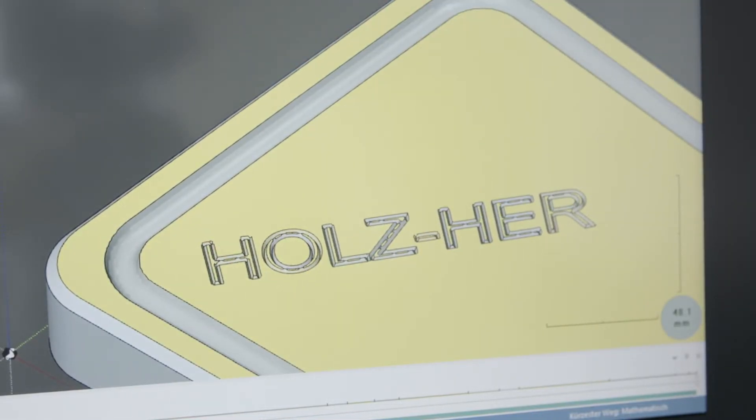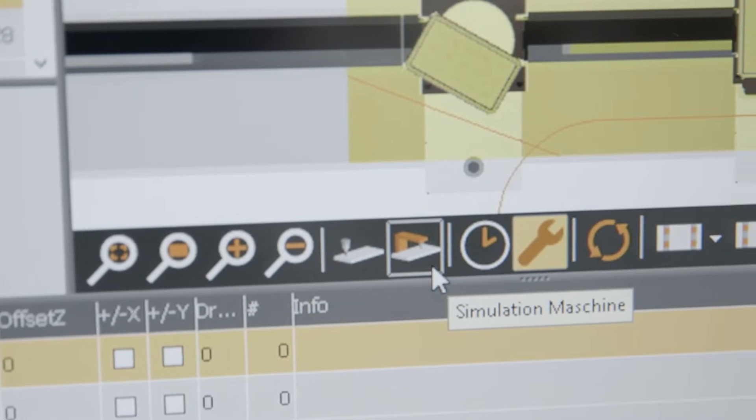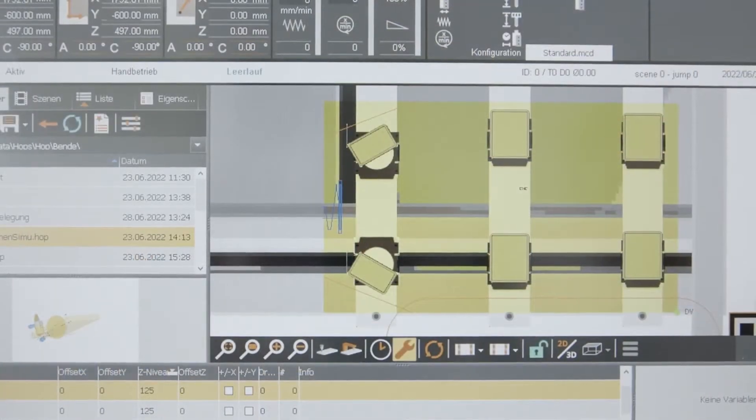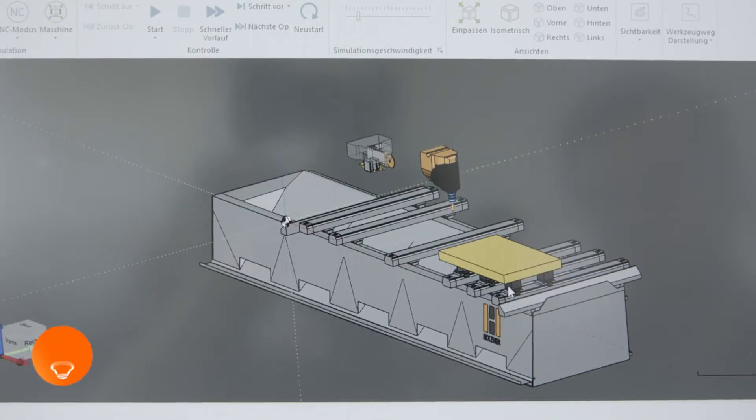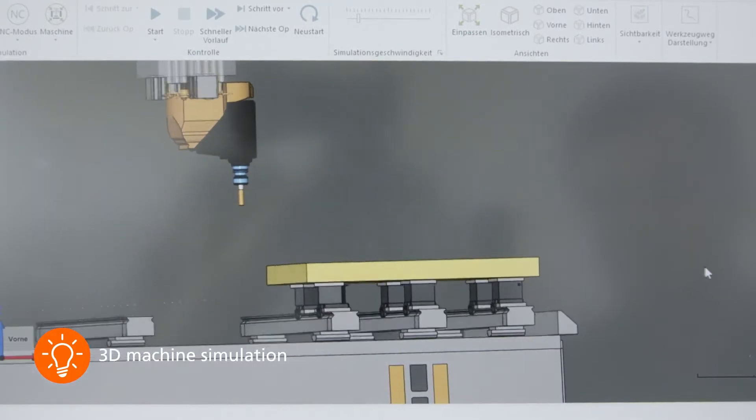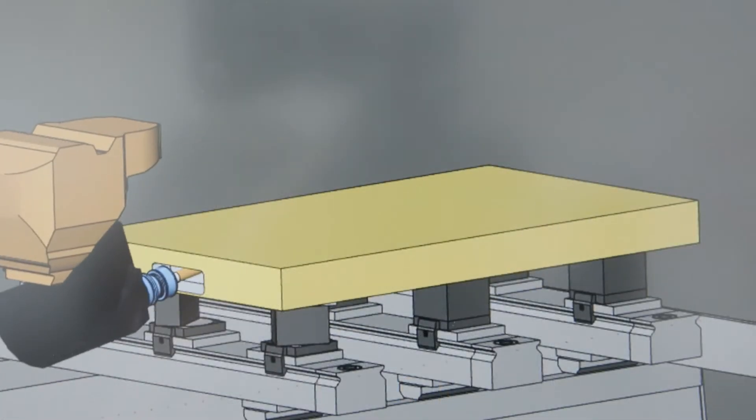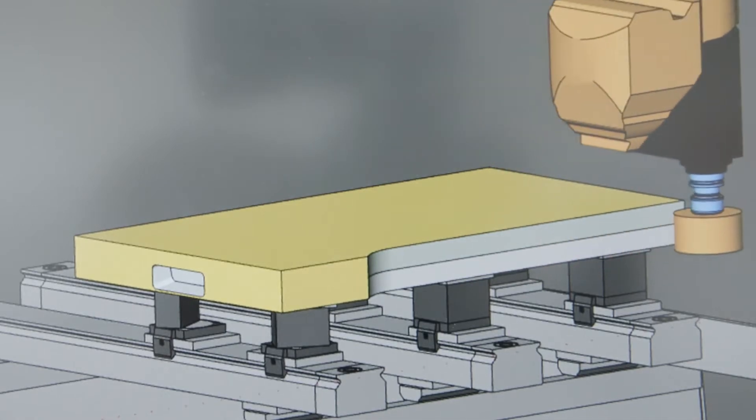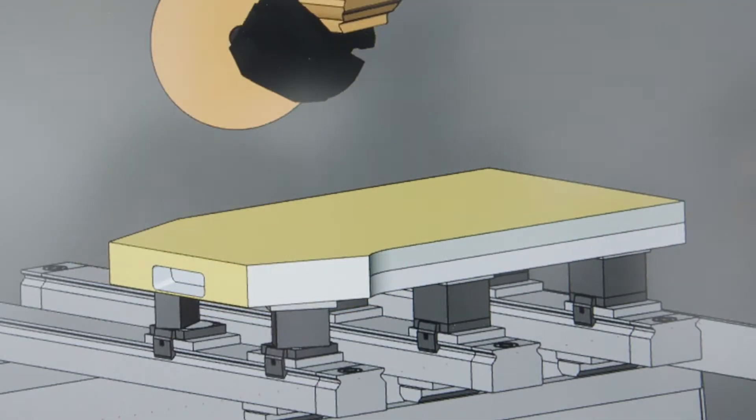This allows you to check all drilling and milling operations in the programming, even before you start machining. The 3D machine simulation can also be used to simulate the complete CNC, including consoles and clamping devices as an upgrade.